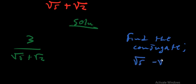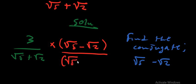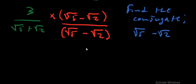The conjugate of the denominator is simply square root 5 minus square root 2 — we just change the sign in between. We are going to multiply this conjugate by both the numerator and the denominator. Remember that when you have such a scenario for the denominator, this simply means this is a difference of two squares, because the signs are different.